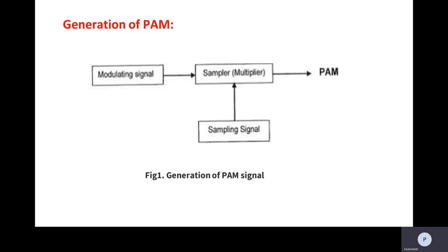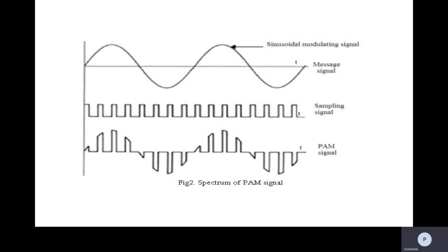We give both the modulating signal and the sampling signal as inputs, and at the output side we get the pulse amplitude modulated wave — that is how we generate the PAM signal. You can see the waveforms: the first is the message signal from the first block, the second is the sampling signal which has pulses, and the third is the pulse amplitude modulated signal. The sampler multiplies both input signals and at the output only the amplitude changes.